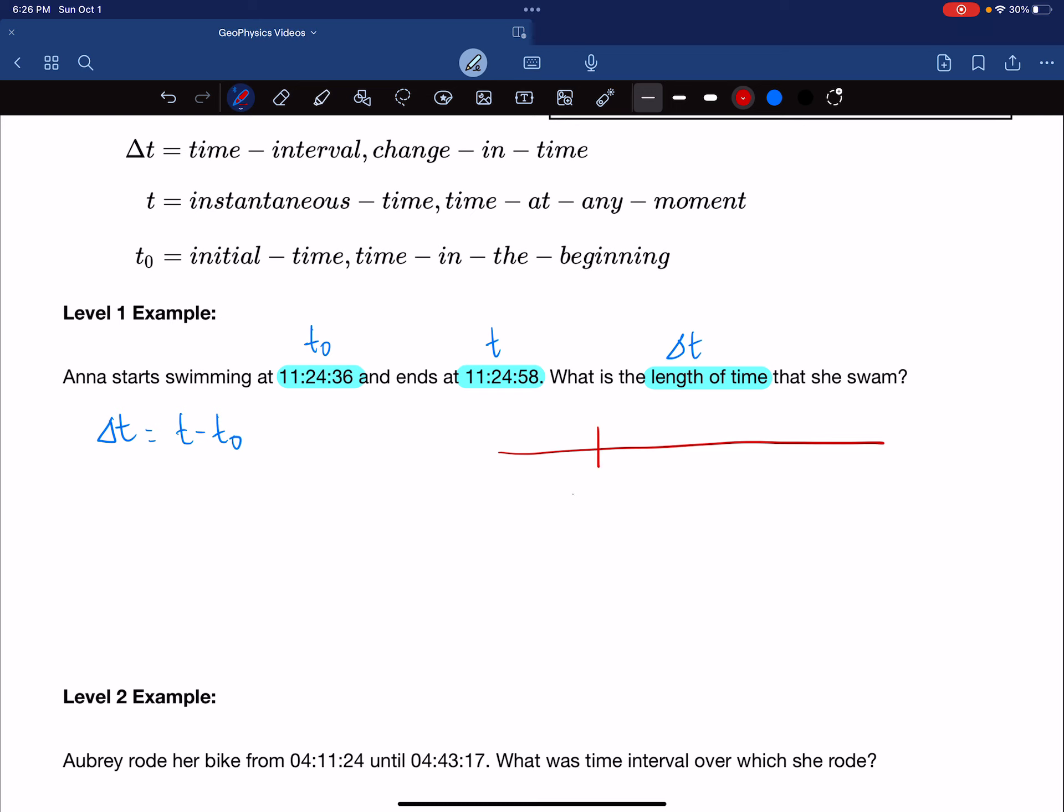And we see we had 11, 24, 36. And this one is 11, 24, 58. Now this isn't a number line like position, where it's the y location or the y position. This is just a number so we could see the relative numbers to each other. We see that time is progressing that way.